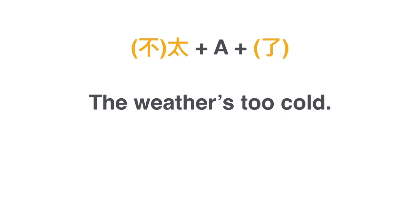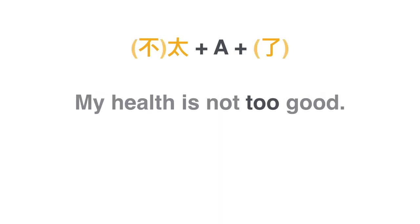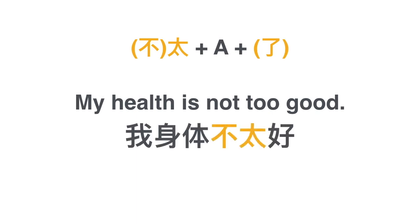How do you say 'the weather is too cold'? 天气太冷了. Perfect. Another practice: how do you say 'my health isn't very good'? 我 — health is body, or 身体. 我身体不太好. Perfect.